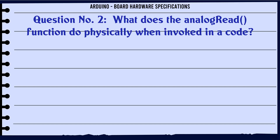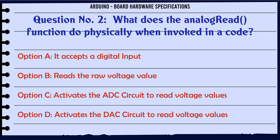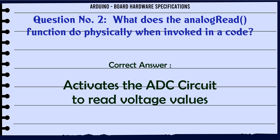What does the analogRead function do physically when invoked in code? A: It accepts a digital input. B: Reads the raw voltage value. C: Activates the ADC circuit to read voltage values. D: Activates the DAC circuit to read voltage values. The correct answer is: Activates the ADC circuit to read voltage values.